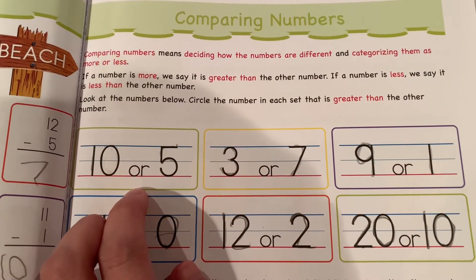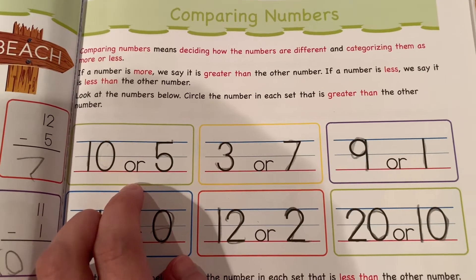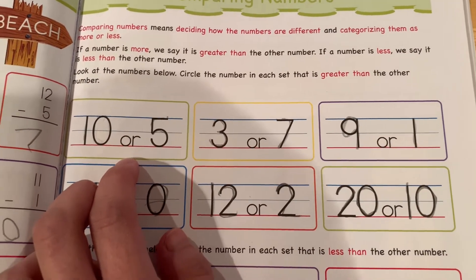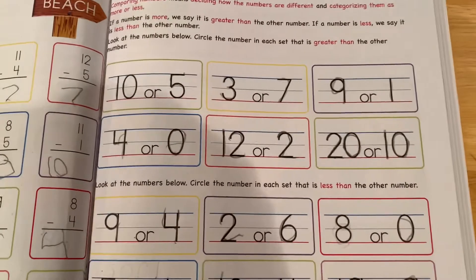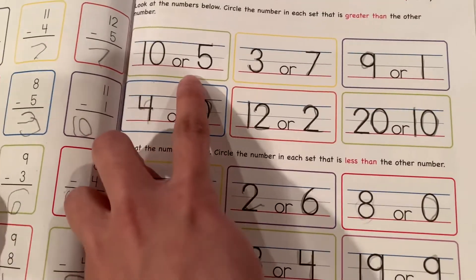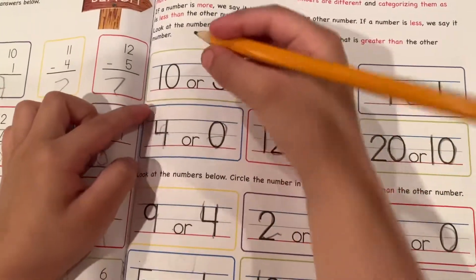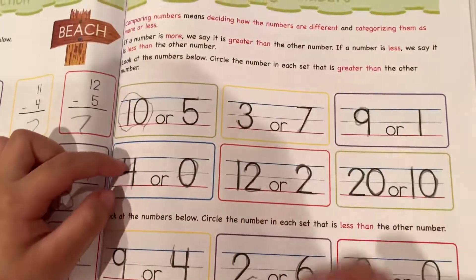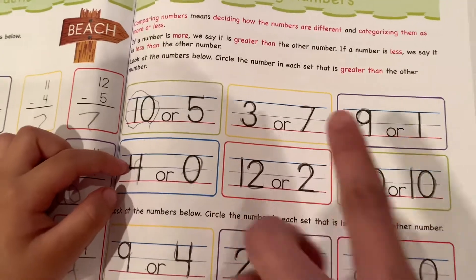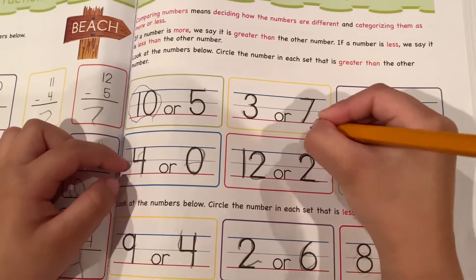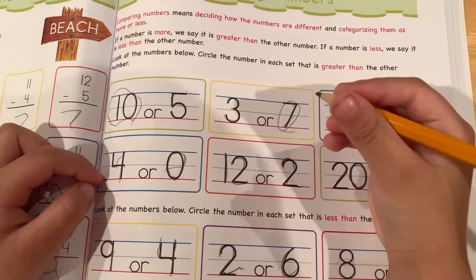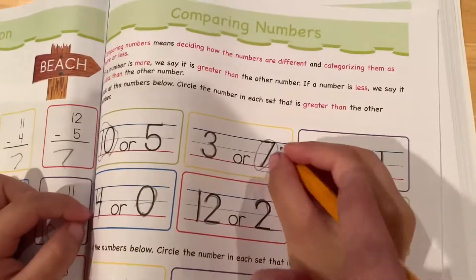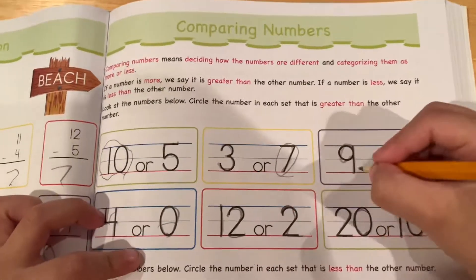Look at the numbers below and circle the number in each set that is greater than the other number. So which one is more? Ten or five? Ten. Okay, circle. How about this one? Three or seven? Seven. Yes. How about nine or one? Nine. Okay.